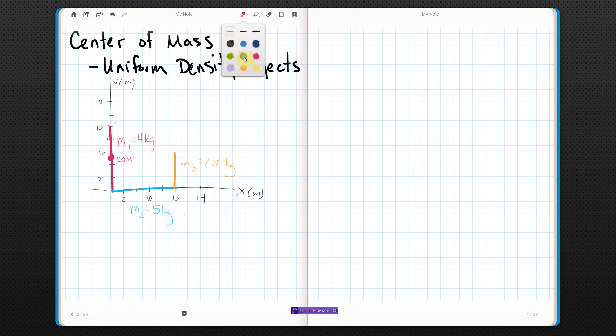For the blue rod, again, the mass is evenly distributed. So the center of mass of the blue one should be in its middle. It's 10 units long, so the middle is at 5. Right there. So that's center of mass for object number 2.